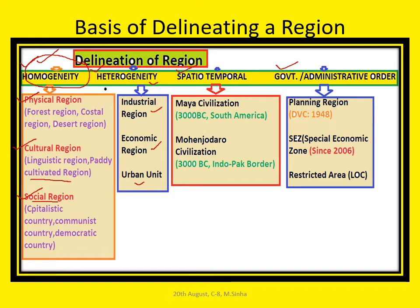For economic region, Mumbai is our economic capital — Mumbai is considered as an economic region. For urban region, Delhi and its satellite town Noida are a nodal region. Rajarhat is a satellite town of Kolkata. Those are examples of urban units. We can delineate the region on the basis of industrial region, economic region, and urban unit.